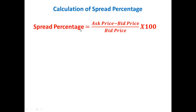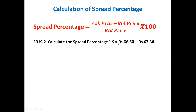The formula for spread percentage is: Spread Percentage = (Ask Price − Bid Price) ÷ Bid Price × 100. Here, ask price is the rate at which the banker or dealer agrees to sell the foreign currency, and bid price is the rate at which the banker or dealer agrees to buy the foreign currency.